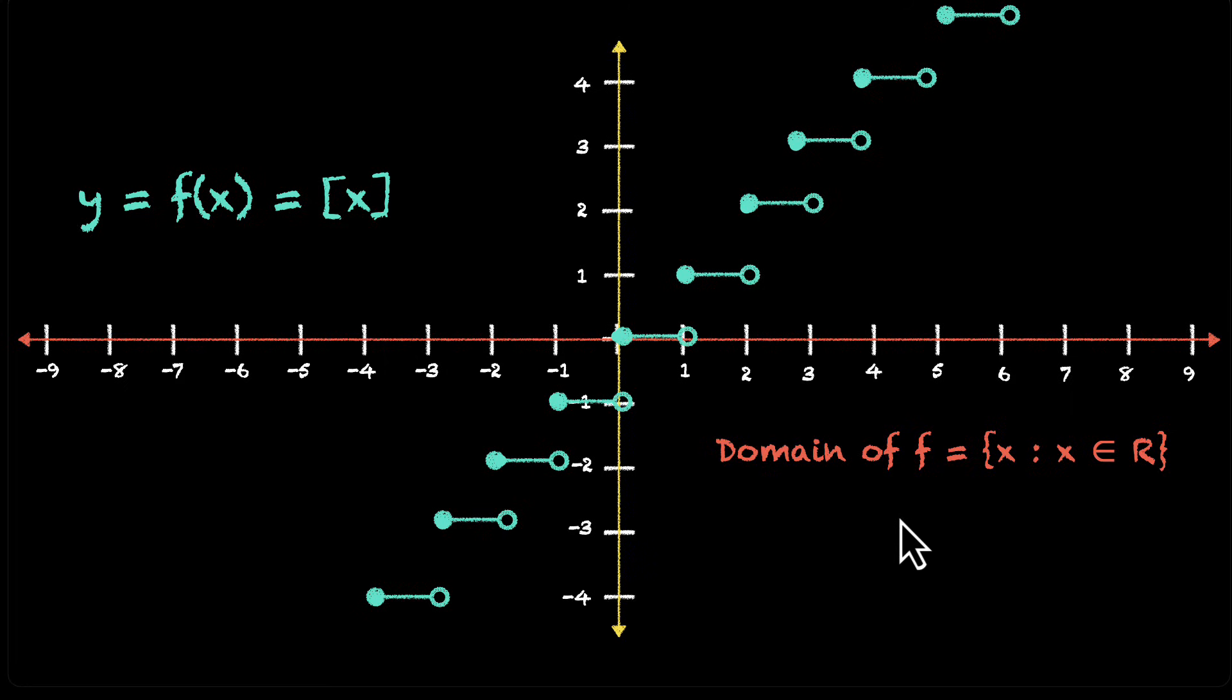What about the range? Well, all values are not allowed for the range. There are very specific values that this function throws out. All of these values are integers. So, this means the range is y, where y belongs to I, where I is the set of integers.